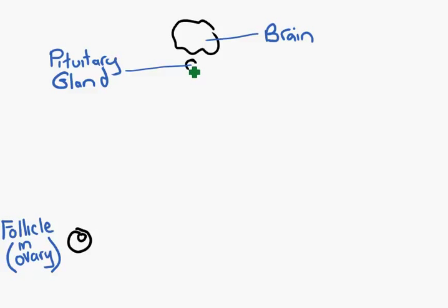This signal is a chemical called FSH, which stands for Follicle Stimulating Hormone. Yep, you guessed it, this stimulates the follicle to start to develop.